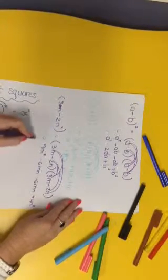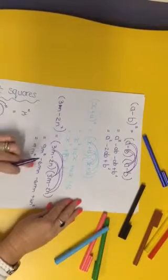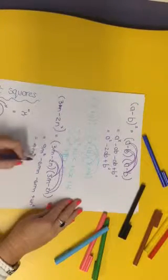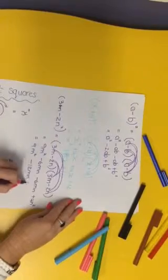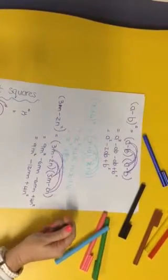Let's add that up. So we've got 9m squared. Negative 6 take another 6 gives you negative 12mn plus 4n squared. Beautiful. Right guys, give that a go.